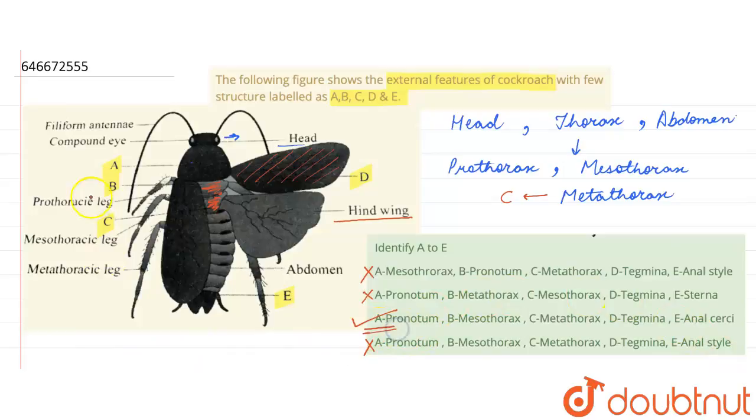For class 6 to 12, IIT and NEET level. Trusted by more than 5 crore students. Download Doubtnut app today.